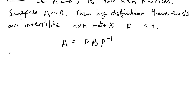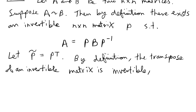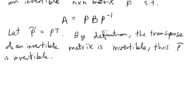I'm going to introduce another matrix that I'll call P̃, and that's going to be equal to P transpose. We know that P is an invertible matrix. By definition, the transpose of an invertible matrix is also invertible. So we can say: thus we know that P̃ is invertible.